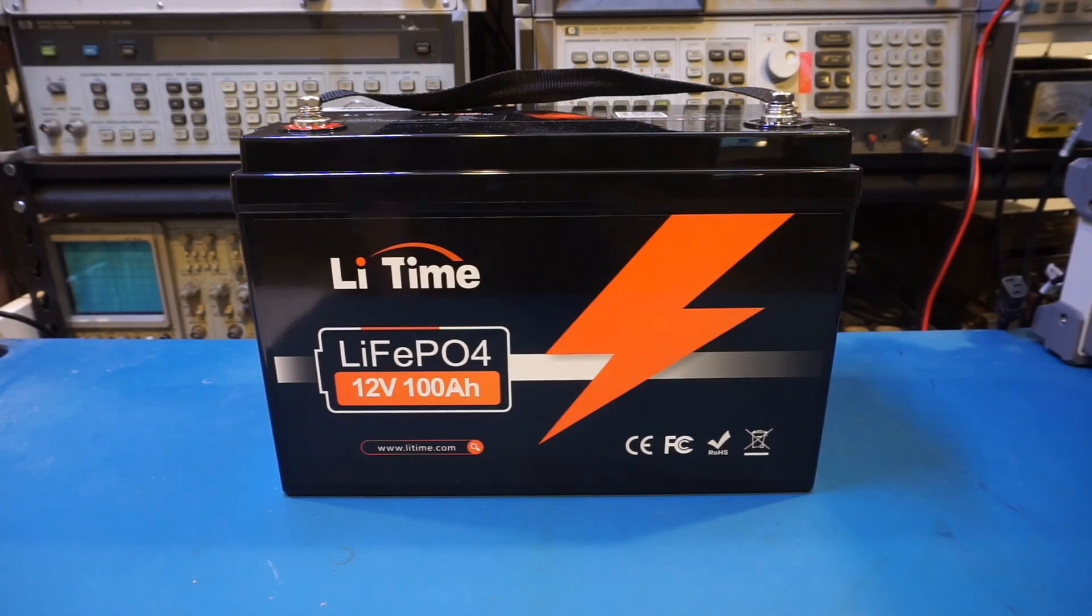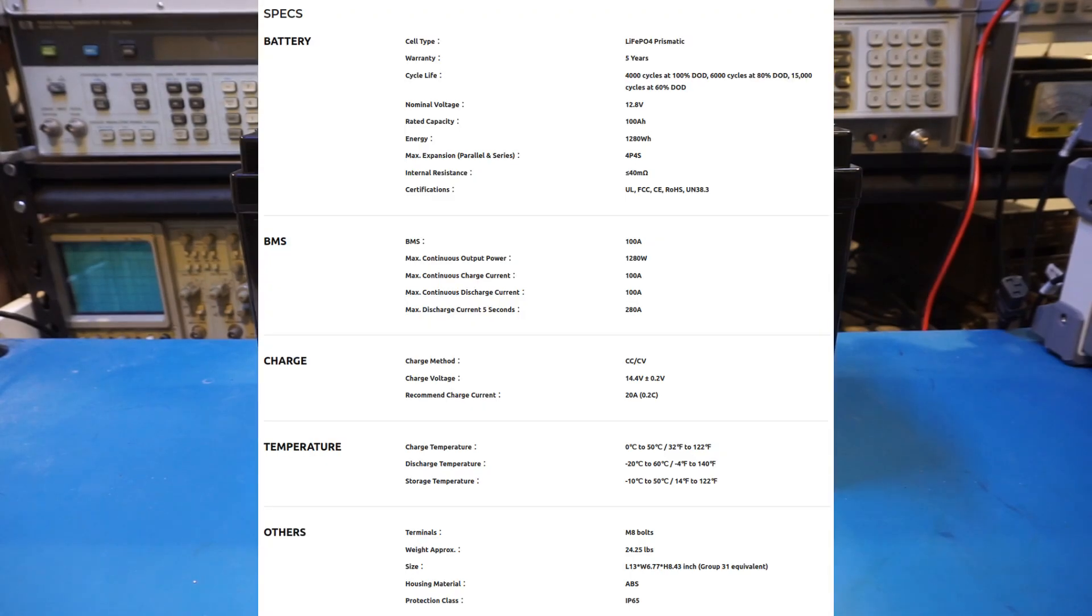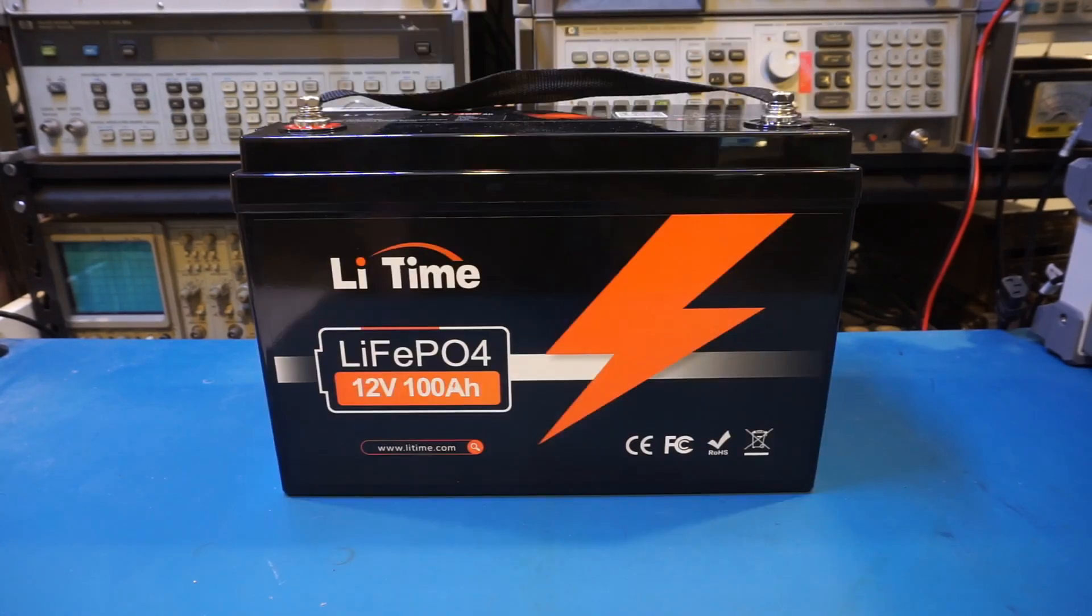Li Time is a fairly well-known brand in the lithium battery industry. They offer different sized LFP batteries, inverters, and accessories. The battery I have here is Li Time's standard Group 31 12V 100Ah battery. Li Time also has other 100Ah batteries, and you can check them out on their website.